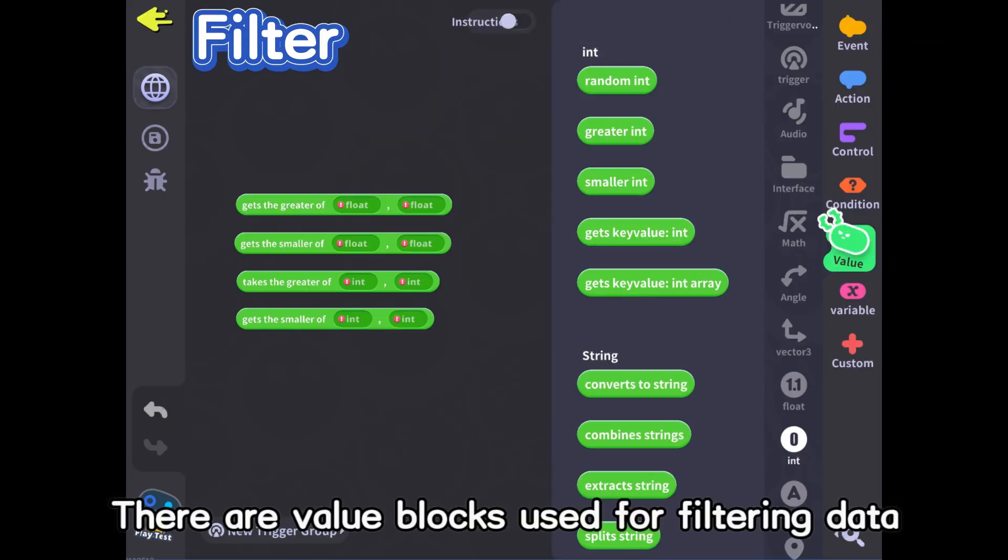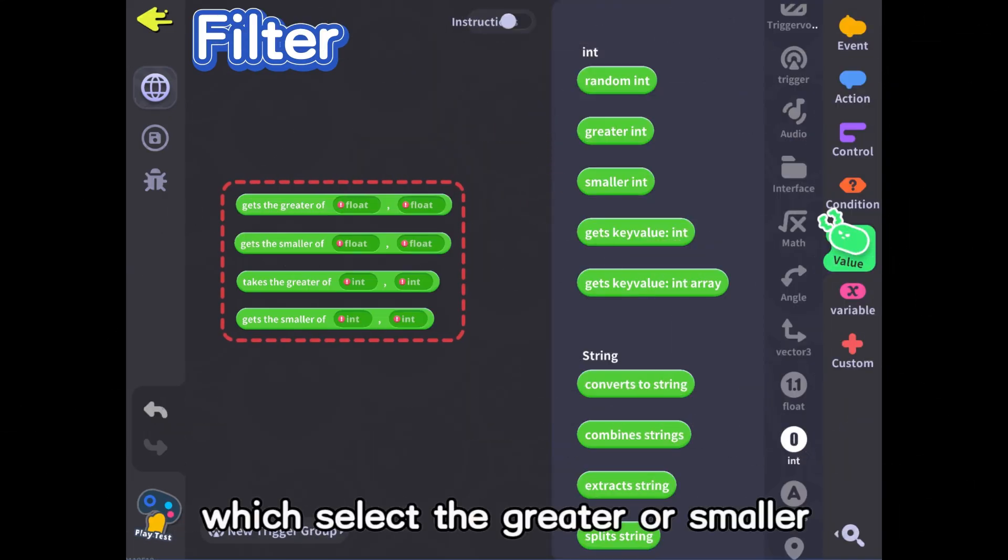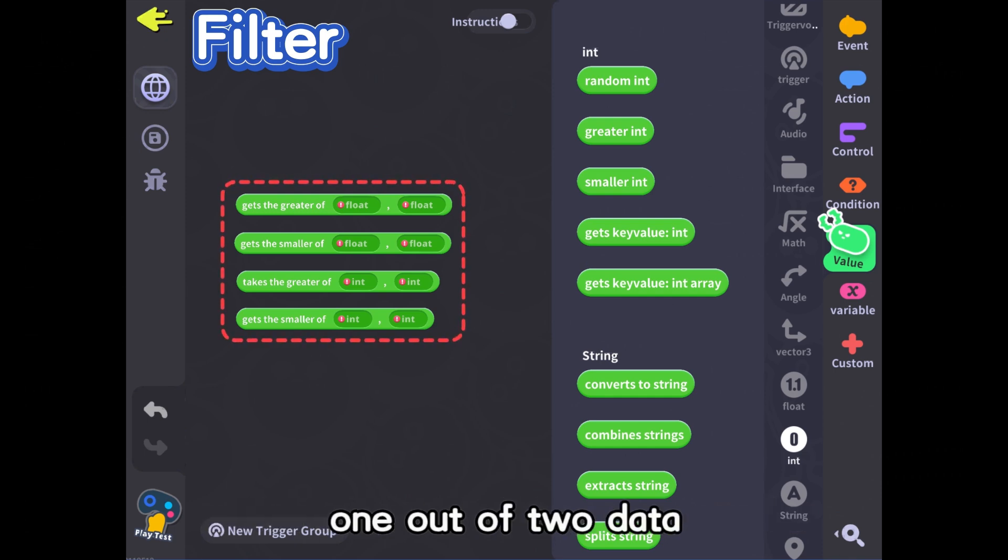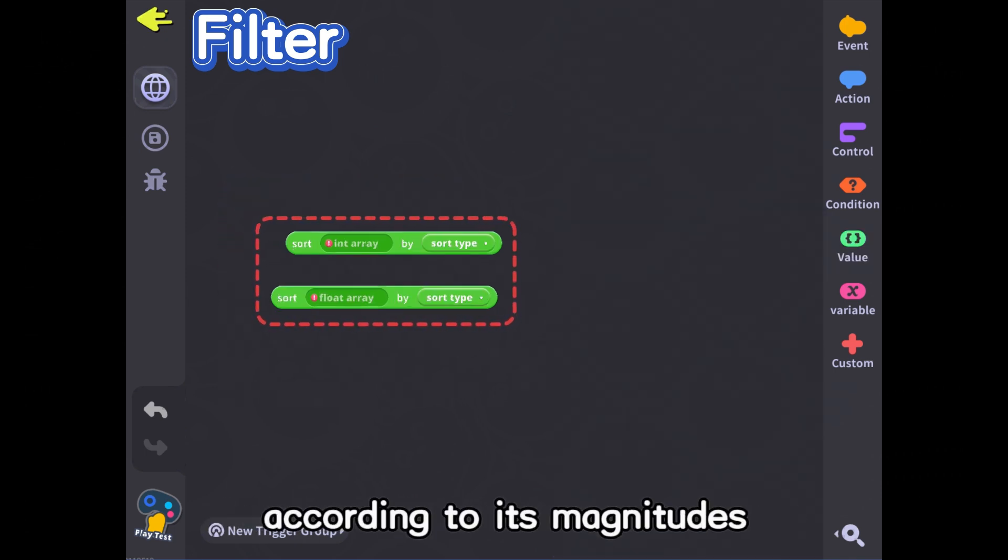There are value blocks used for filtering data, like greater int and smaller int, which select the greater or smaller one out of two data. SortArray can reorder elements according to its magnitudes.